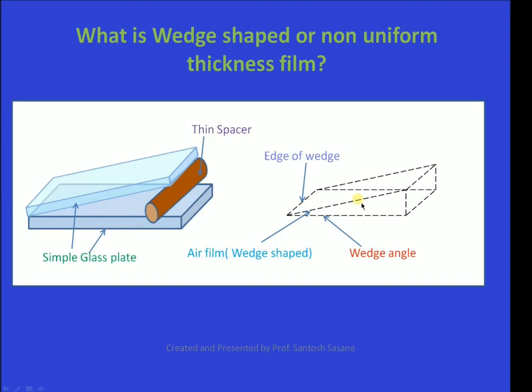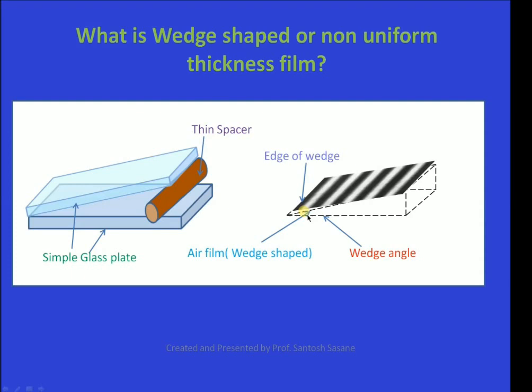When light from a monochromatic source falls from the top side on the wedge-shaped film, you will find an interference pattern of alternate bright and dark fringes which are straight and equidistant. If the light is monochromatic, for example yellow, then you will see alternate yellow and dark fringes in the field of view. The fringes are straight because the thickness of the wedge-shaped film remains constant along that particular direction. As you go from left to right, the thickness changes, and therefore the fringes also change — dark becomes bright and bright becomes dark.